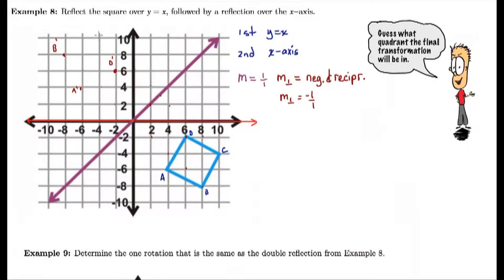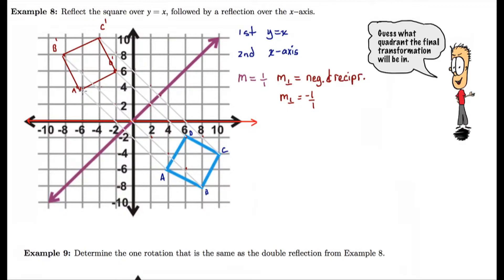So our perpendicular slope is going to be negative 1 over 1. So I can use that idea of the slope and find the point equidistant to the line of reflection. So here I have a prime, b prime, c prime, d prime, and I make these little gray lines here. You can see those are being perpendicularly bisected by the line of reflection. So there's my first reflection.